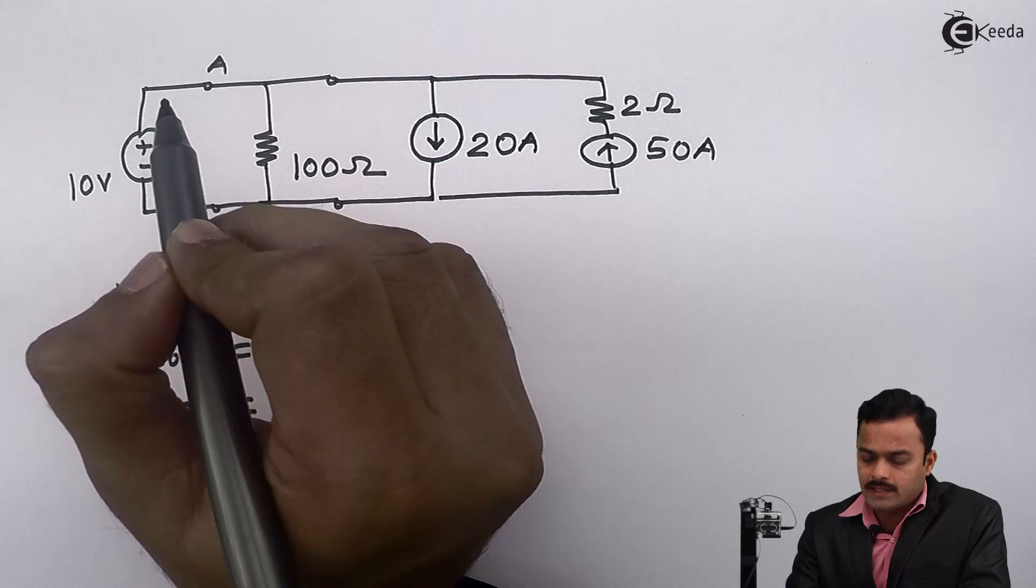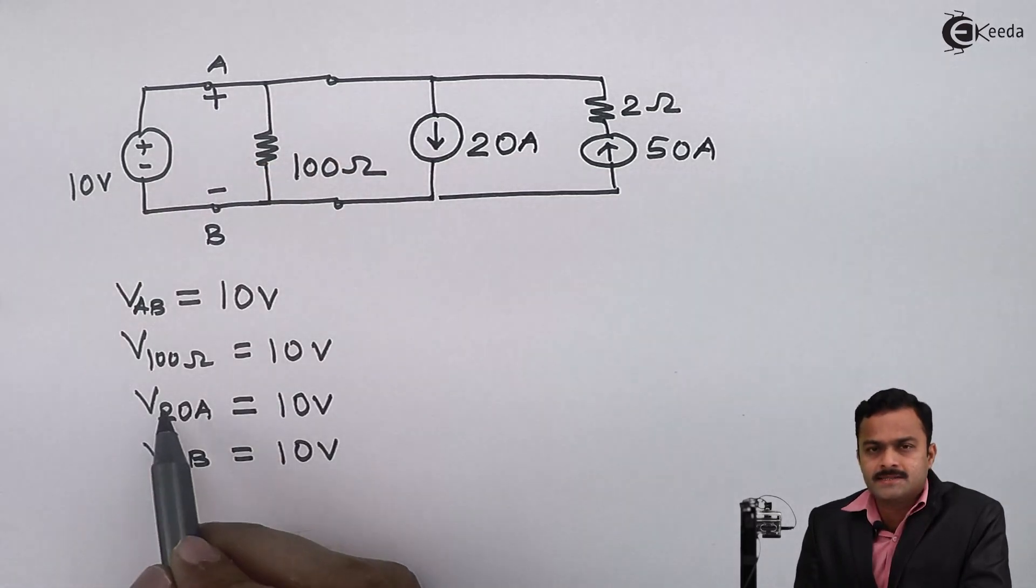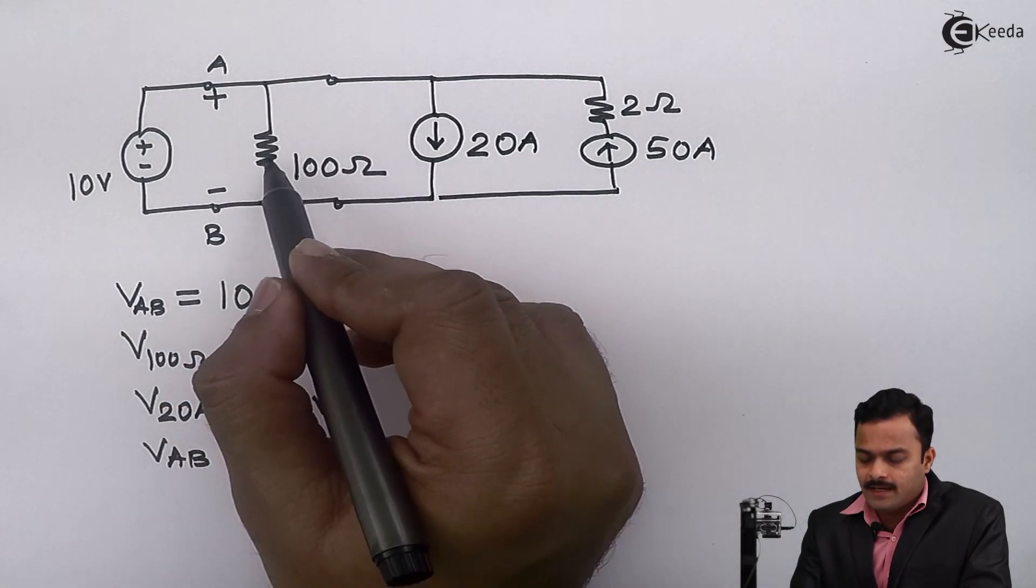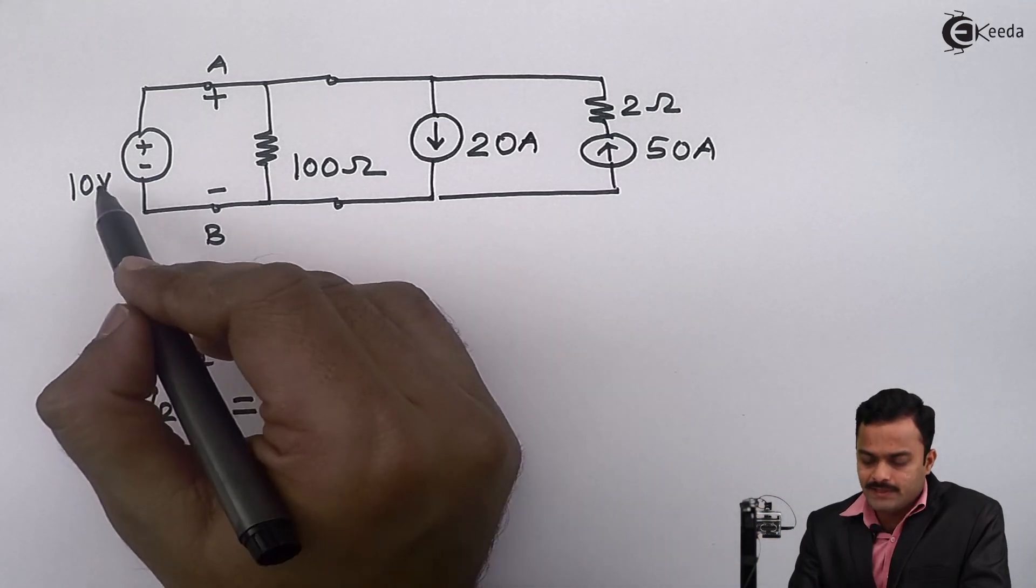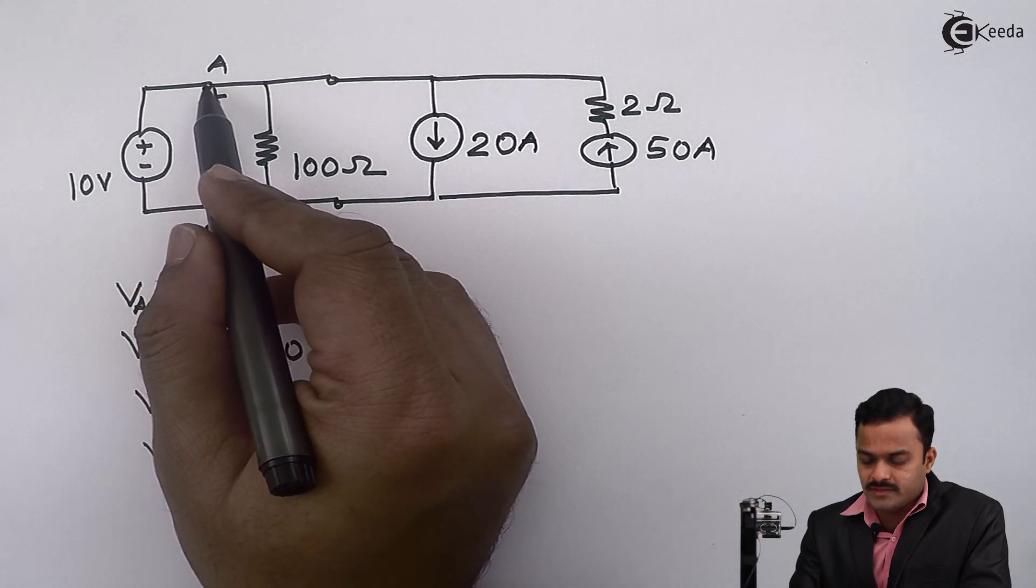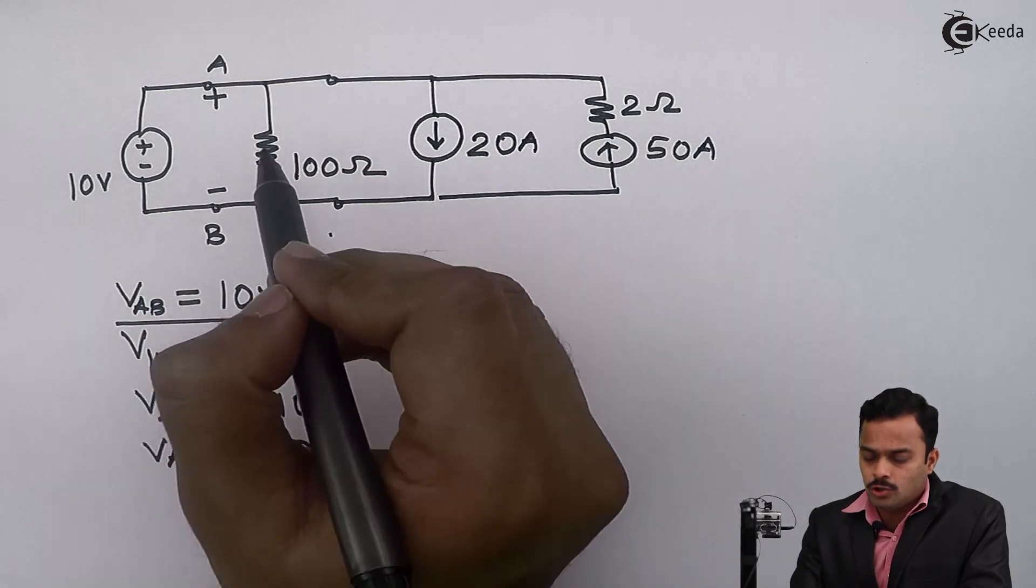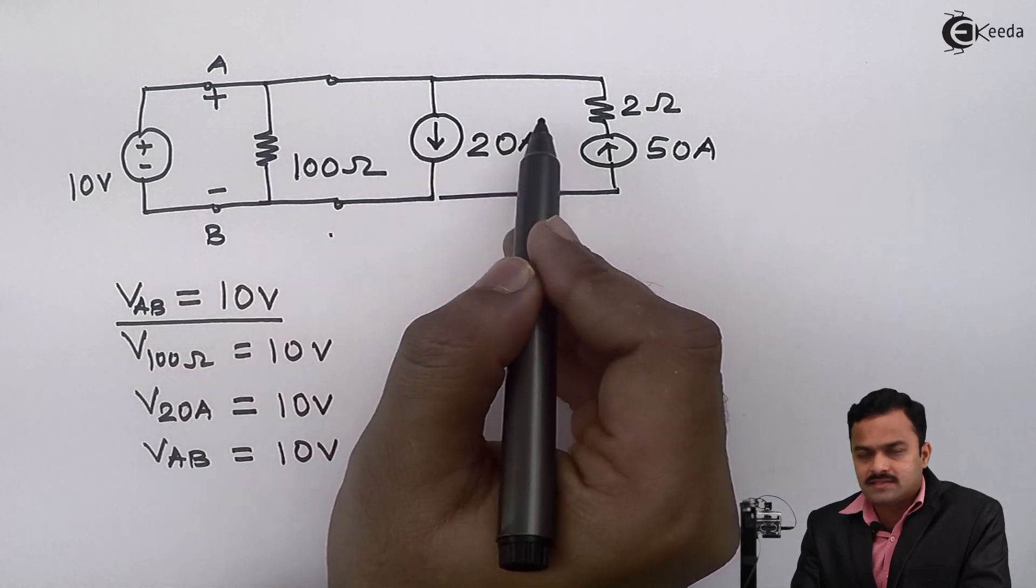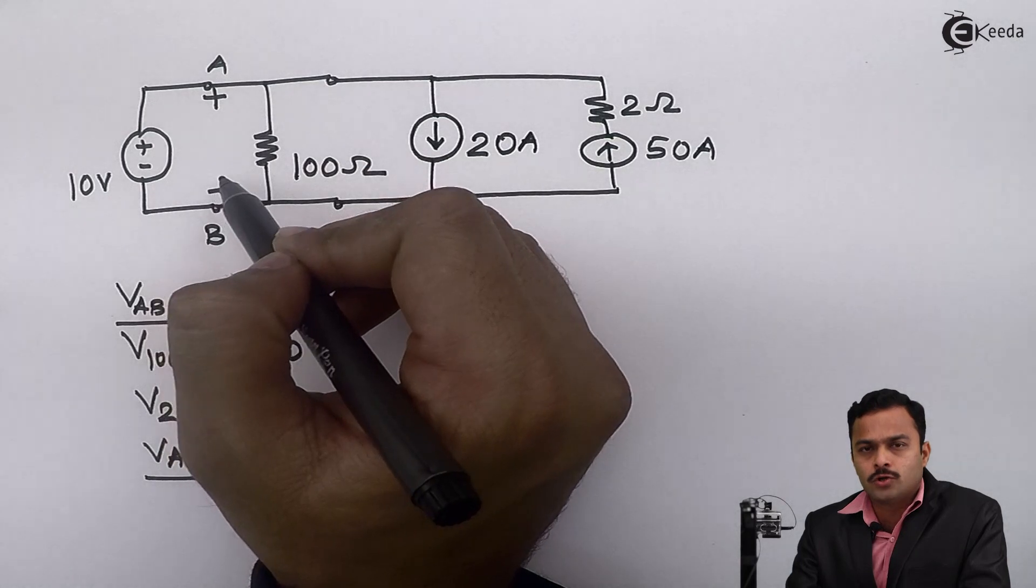So the concept is that whenever a voltage source is connected between any two points, it will fix the voltage between these two points irrespective of any element connected across those two points. In this problem, 10 volts is connected between points A and B, which will fix V_AB to 10 volts, no matter whatever element you connect after this. Still the voltage across these two points is going to remain the same, that is 10 volts.